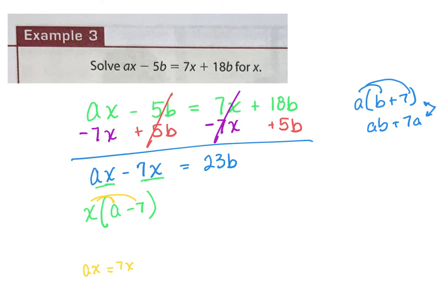Distribution works both directions. So when you have a literal equation like this with two of your variables that you can't combine because of the variable in front, you can use distribution and pull it out. So now on the left-hand side I have X times that parentheses equals 23B. It looks like this: X times (A minus 7) equals 23B. What is happening between the X and this group? It's multiplication.